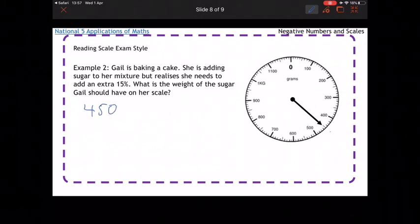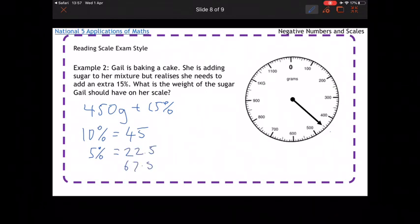We're going to add on an extra 15% of the 450. So what we're going to have to do is find 15% of 450 grams. Easiest way to do that is to find 10% and then to find 5% as well. So to find 10%, you just divide 450 by 10, so that's just 45. Then 5% is just going to be half of that. So half of 45 is 22.5. Add the two things together, and that'll give you 67.5.